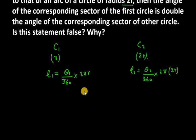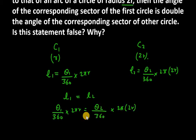So let's check this out. First of all, we know that l1 is equal to l2. So we have theta 1 over 360 into 2πr, then we have theta 2 over 360 into 2π times 2r.